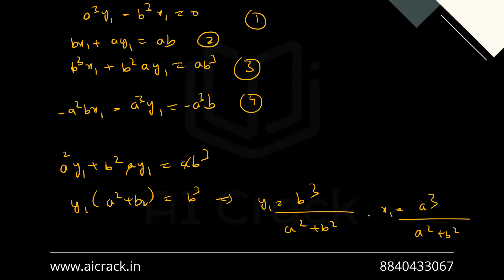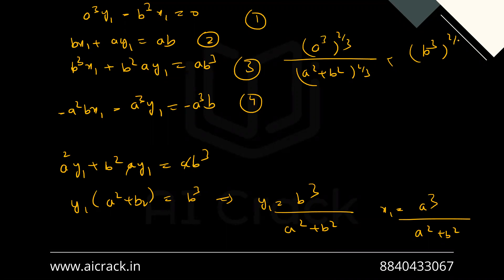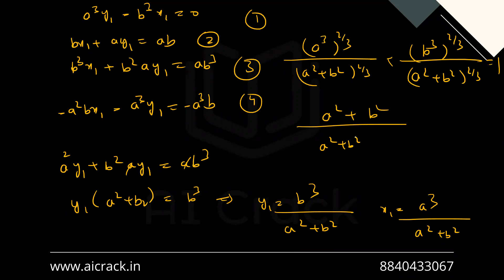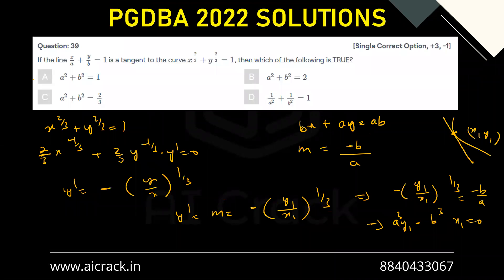Substituting into x^(2/3) + y^(2/3) = 1: we get [a³/(a²+b²)]^(2/3) + [b³/(a²+b²)]^(2/3) = 1, which simplifies to (a² + b²)/(a²+b²)^(2/3) = 1, giving (a² + b²)^(1/3) = 1, and therefore a² + b² = 1. So the correct answer is option A.